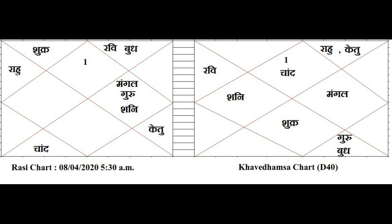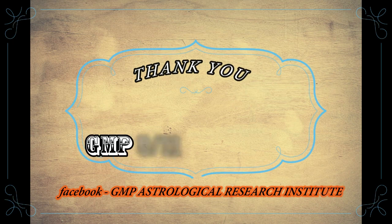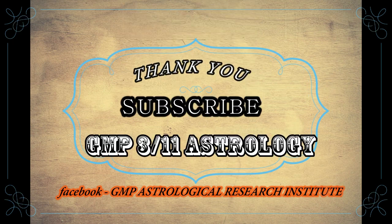We will eliminate the weaker planets and take the stronger planets. If it is 6-8, it should not always be eliminated — if the question is related to loans or debts, you can consider this. Other times we have to eliminate those planets. We will see more with illustrations in the coming days. If you have any doubts, please drop them in the comment section. Thank you, take care, bye.